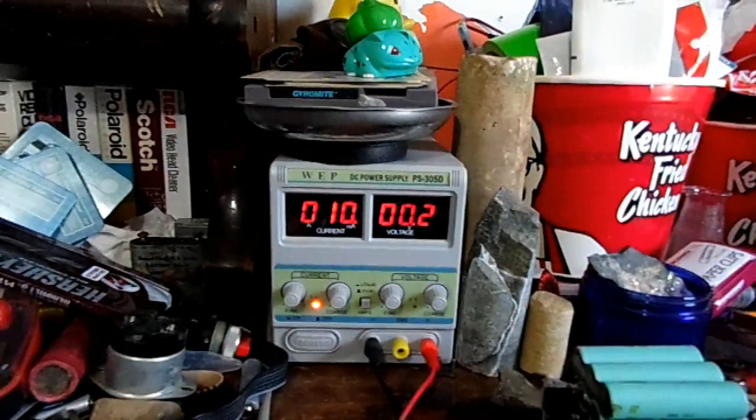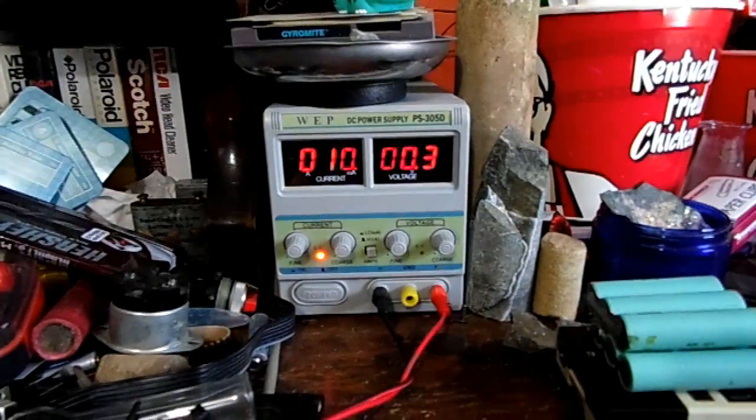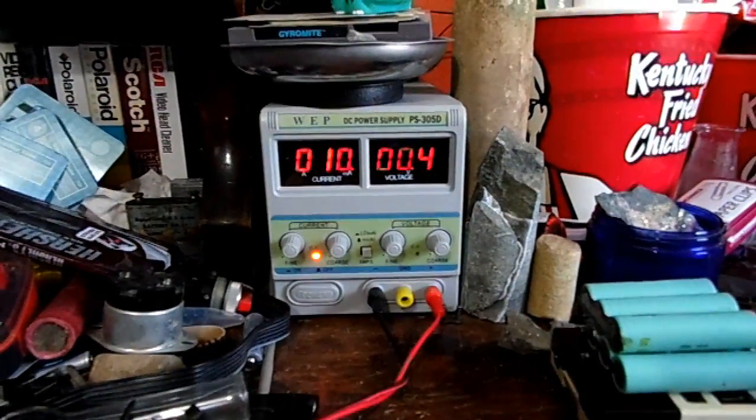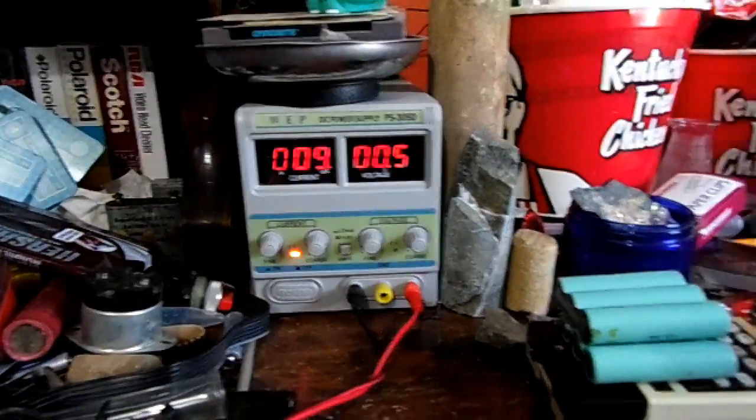It's like 10 milliamps of current. See, the voltage is going up, it's slowly going up, it's taking a charge. We have to charge it at an extremely low current, otherwise it will short the cell out.